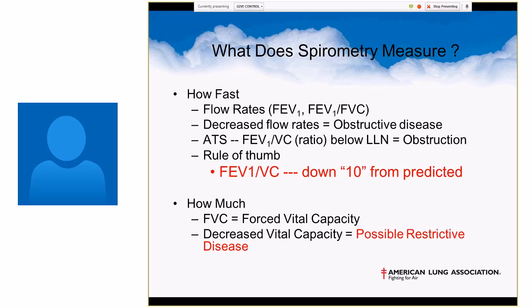So really, what does spirometry measure? First off, quite simply, it measures how fast the air comes out of your patient. Flow rates are like FEV1, expressed in liters, but it's the amount of air that comes out in the first second. The FEV1 over the vital capacity, or the FVC, is another measure of flow. The American Thoracic Society has decided that a decreased flow rate equals obstructive disease.